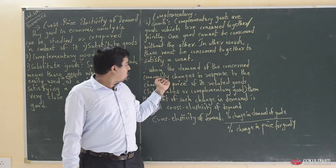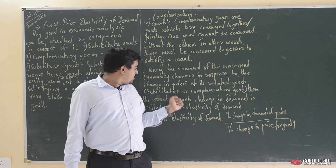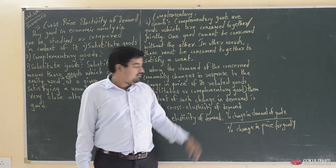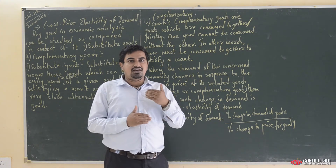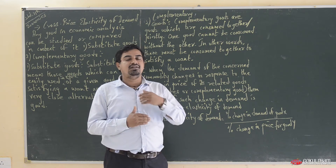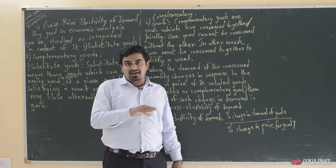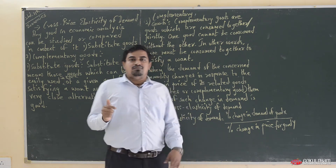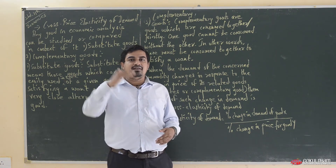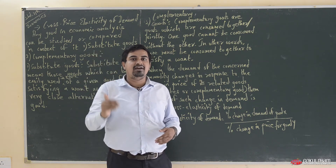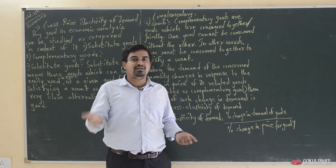When the demand of the concerned commodity changes in response to the change in price of its related goods, then that is termed as cross price elasticity of demand. Cross price elasticity of demand shows to what extent the demand for a particular commodity changes because of a change in the price of its related goods — it shows the proportionate change in the demand of a commodity due to a change in the price of related goods.